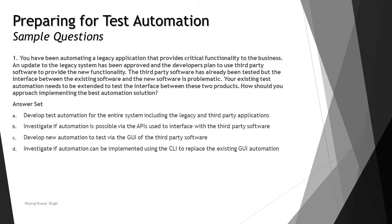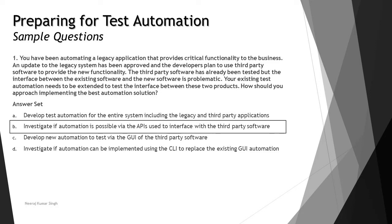Option C — develop new automation to test via the GUI of the third-party. We are not really interested in testing the GUI of the third-party software; that would already be done. We are looking at integration and interfaces. Option D — investigate if automation can be implemented using the CLI to replace the existing GUI automation. When we have option B, which is clearly correct, performing any other irrelevant activity would not be the right option. So the right answer here is B.